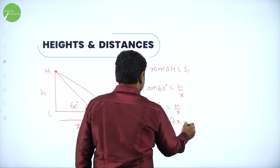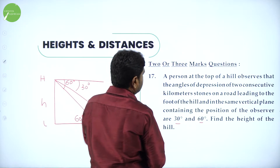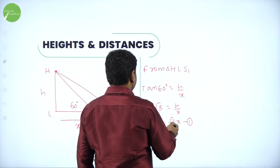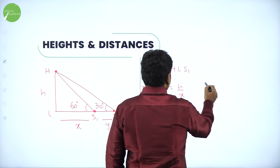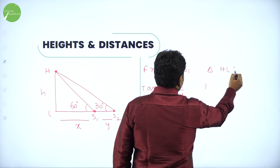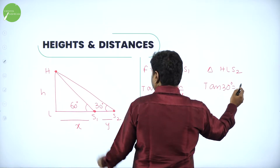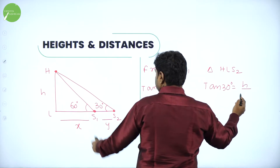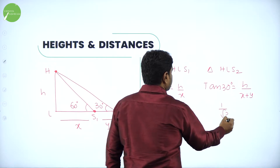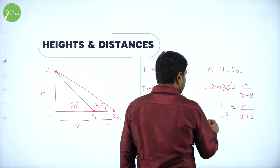They have not given the distance between the stones, so we work in terms of x and y. From the other triangle HLS2, tan 30 degrees equals H divided by (x plus y). Tan 30 is 1 over root 3, so 1 over root 3 equals H divided by (x plus y).